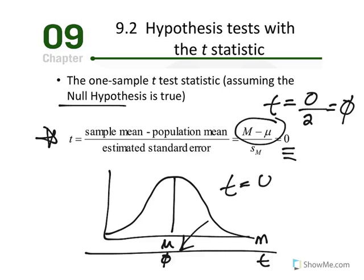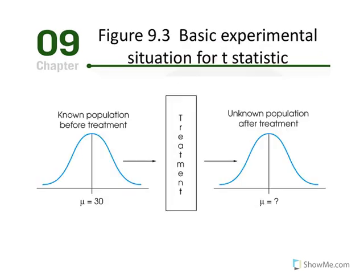T equal to zero equals null — no change, no difference. The basic experimental situation for using the t-statistic is presented in figure 9.3. It assumes that the population parameter mu is known before treatment. The purpose of the experiment is to determine whether the treatment has an effect. We could also simply be testing a difference between a quasi-independent variable, such as the difference between males and females — not always testing the effect of a treatment.